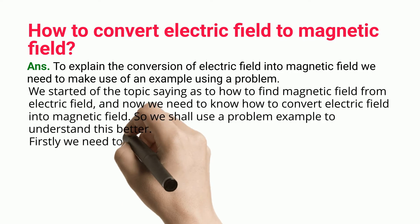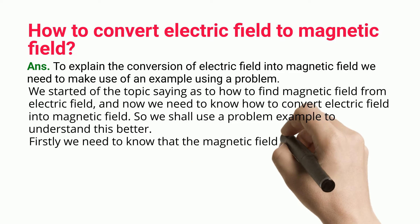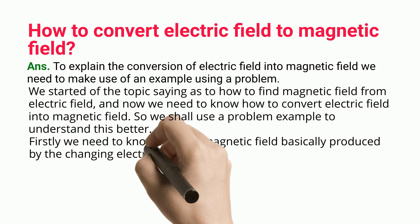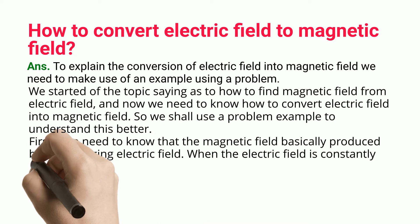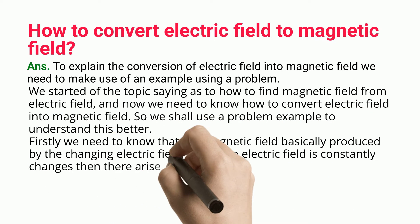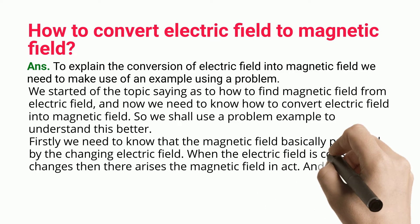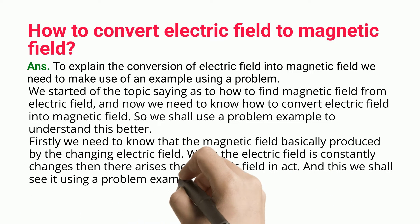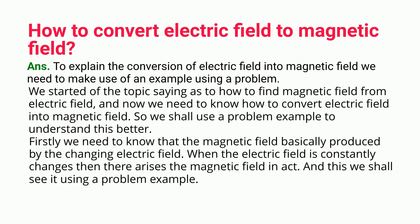Firstly, we need to know that the magnetic field is basically produced by a changing electric field. When the electric field constantly changes, the magnetic field arises. We shall see this using a problem example.